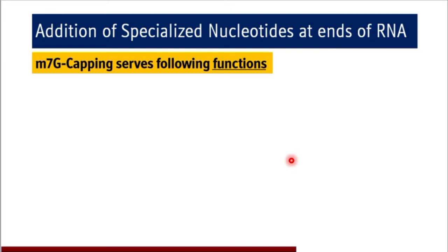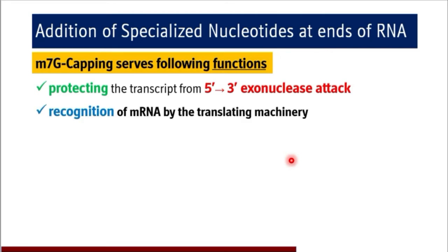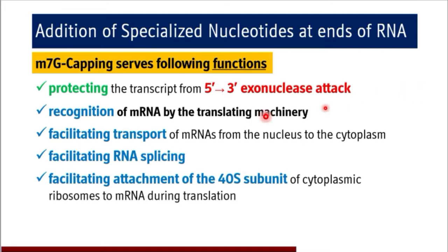What are the functions of the 7-methylguanosine cap added to the 5' end? It gives protection to the RNA molecule from 5' to 3' exonuclease attacks. This 7-methylguanosine cap enables the translating machinery to recognize mRNA precisely. It facilitates transport of mRNA from nucleus to cytoplasm. It facilitates RNA splicing. It also facilitates attachment of the 40S subunit of cytoplasmic ribosome to mRNA during the translation process.